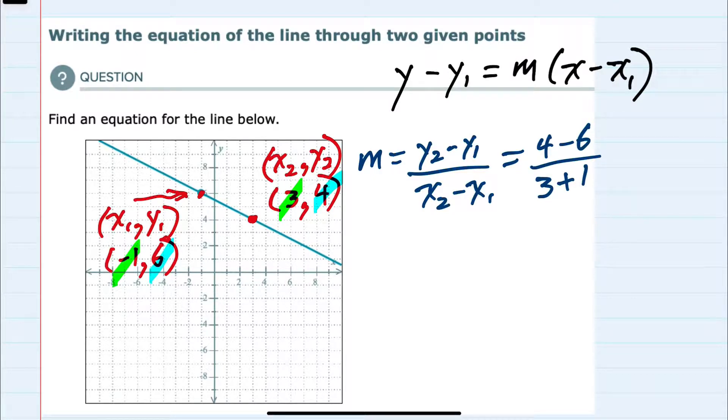We can simplify this fraction and see that we have a minus 2 in the numerator and a 4 in the denominator, so our slope is a negative 1 half.